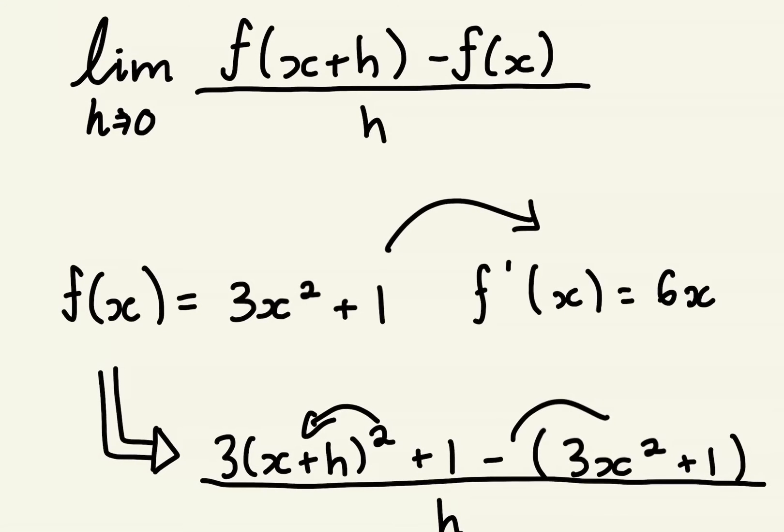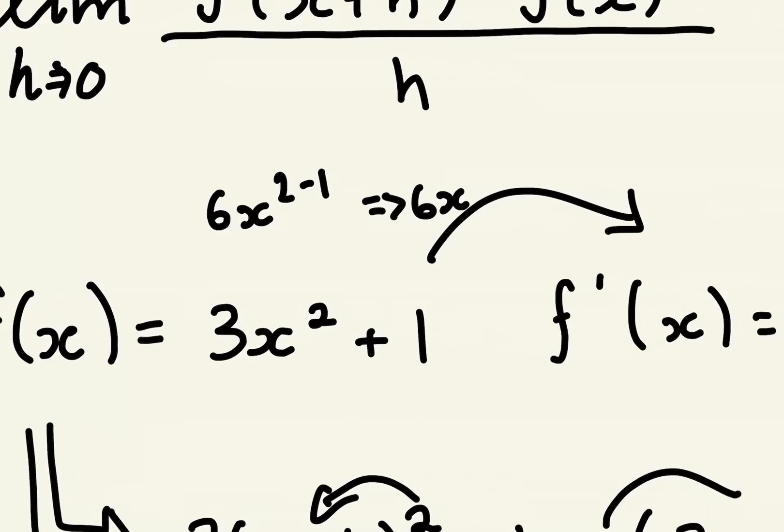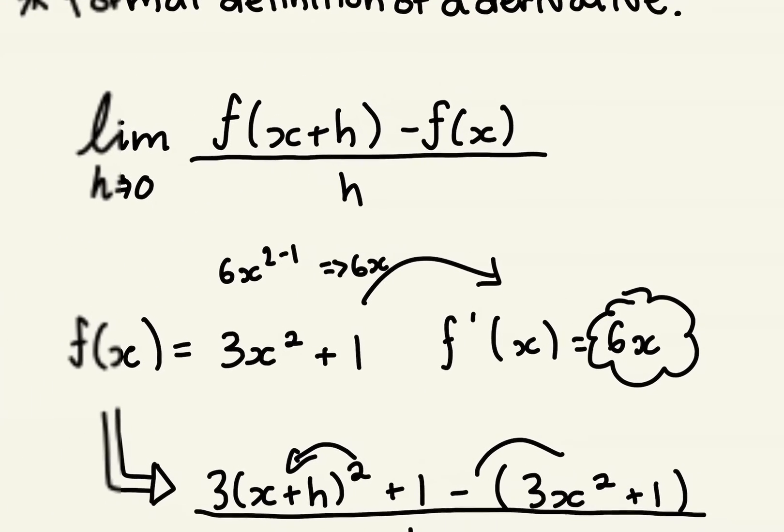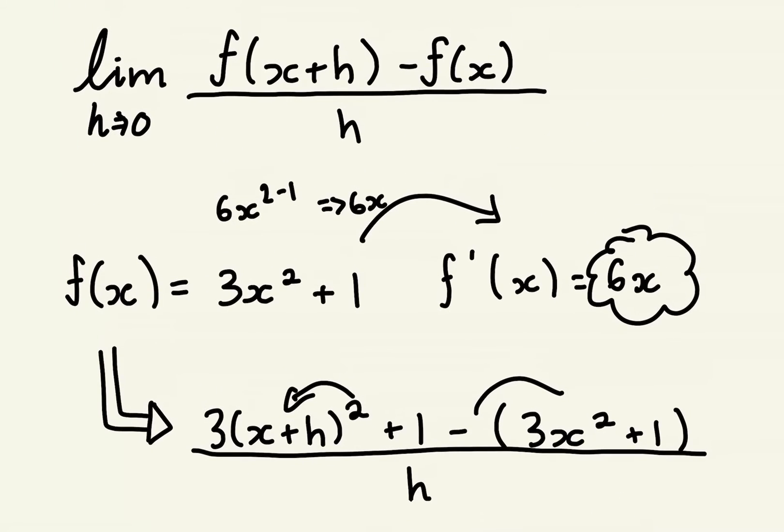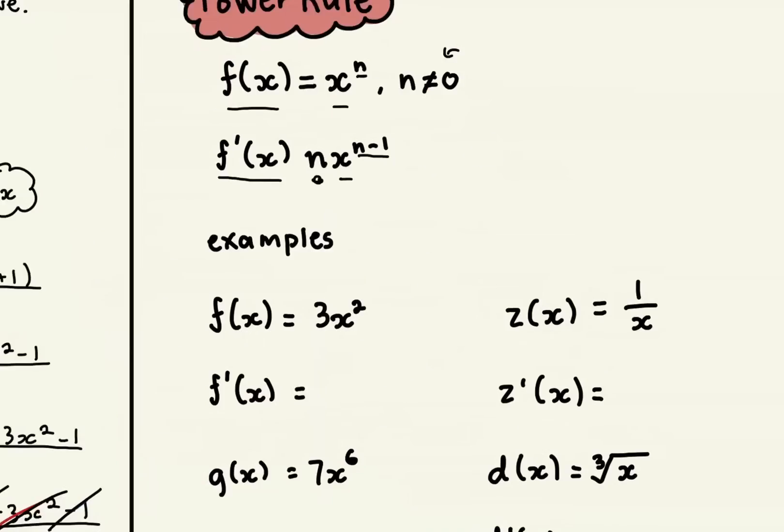What we can do is we can multiply 2 by 3x, get 6x, and do 2 minus 1, that gives us 6x. And sure enough, that was the derivative that we found using the long formal definition. So it really makes it simple.